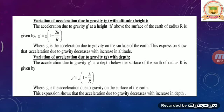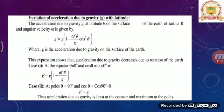For variation of acceleration due to gravity with depth, the acceleration due to gravity at depth H is given by g' equals g times (1 minus H/R). This equation gives the acceleration due to gravity at depth H below the surface of the earth. From this equation it is clear that acceleration due to gravity decreases with increase in depth. Comparing both equations, the acceleration due to gravity is maximum at the surface of the earth and decreases both above and below it.